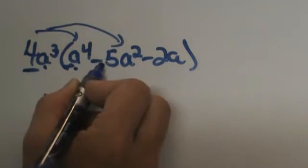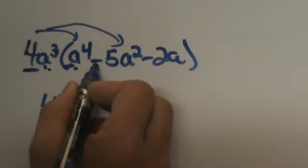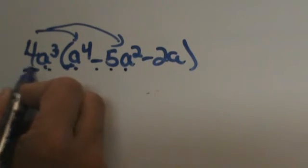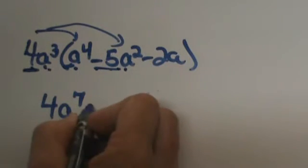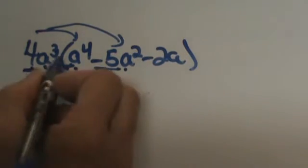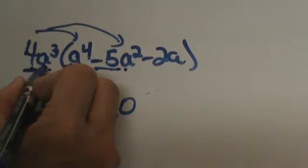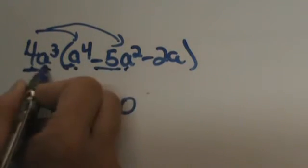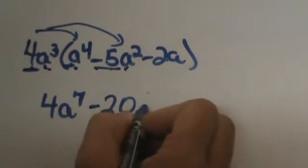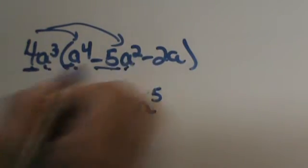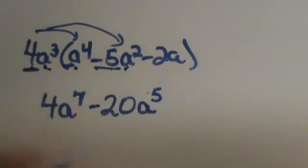Next, a cubed times negative 5a squared: 4 times negative 5 is negative 20. Remember the rule for exponents — we add the exponents when multiplying. So a to the 3rd times a squared gives a to the 5th, because 3 and 2 is 5.